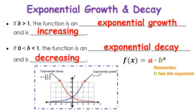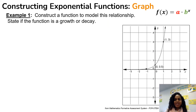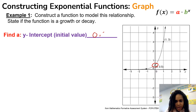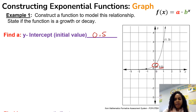Let's take a look at Example 1. It says: construct a function to model this relationship and state whether the function is a growth or decay. The first thing we want to do is find 'a', which is the y-intercept or the initial value. Looking at this graph, 'a' is right here on the y-axis, and so my a is 0.5 — that is your initial value.